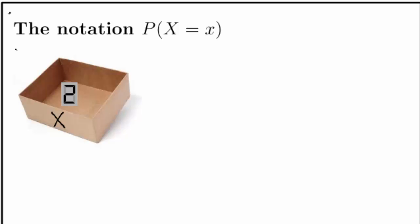So when you look in the box, there is a chance that you will actually see the number 2. That is, there is a certain probability that this will happen. So we need a shorter way of writing the probability that you will see the number 2 when you look inside the box. And the short way of writing such a statement is P, capital X, equal to 2. This is a probability, so this number P(X=2) must lie between 0 and 1.